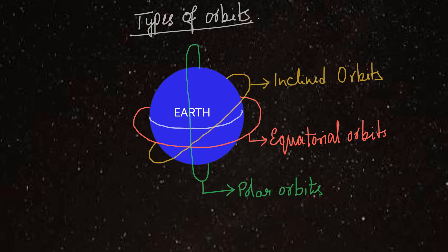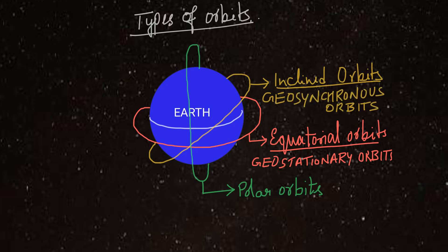Among these, equatorial orbits we also call geostationary orbits. Then these inclined orbits are geosynchronous orbits. We can note here that geostationary orbits are a type of geosynchronous orbits only. When a geosynchronous orbit's angle of inclination with equator becomes zero, then it becomes a geostationary orbit.